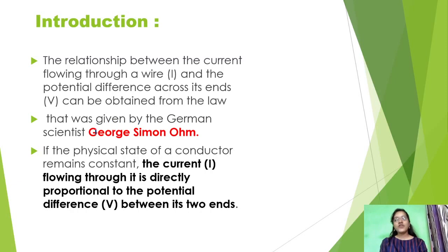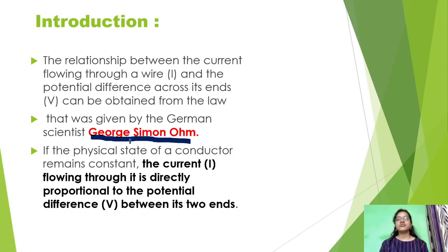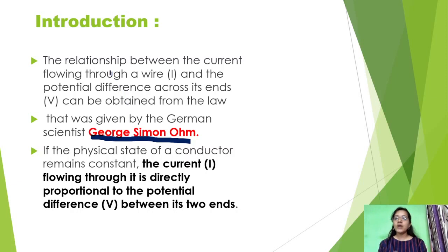Ohm's Law was given by George Simon Ohm. He told us the relationship between the current flowing through a wire and the potential difference across its ends. So we get Ohm's Law through a relationship between current and potential difference.